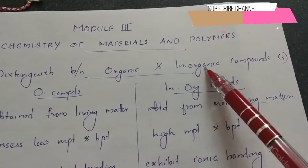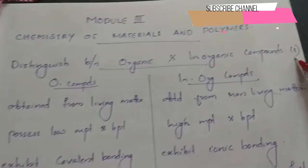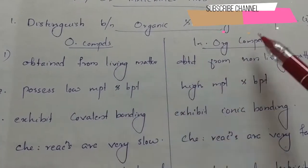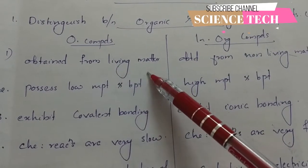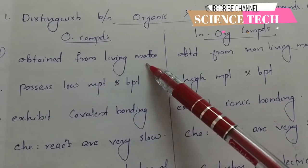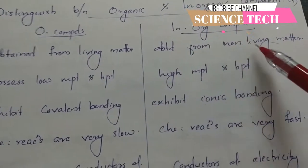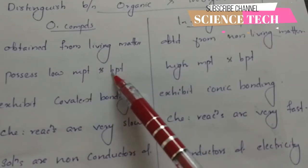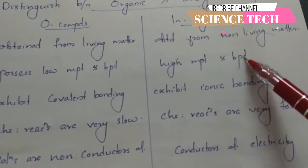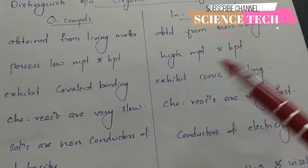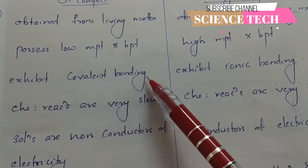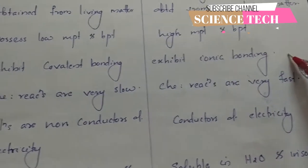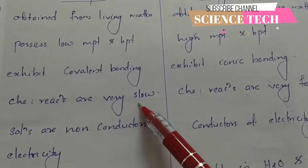Distinguish between Organic and Inorganic Compounds. Organic Compounds are obtained from living matter, whereas Inorganic Compounds are obtained from non-living matter. Organic Compounds have low melting point and boiling point, whereas Inorganic Compounds have high melting point and boiling point. Organic Compounds exhibit covalent bonding, while Inorganic Compounds exhibit ionic bonding.